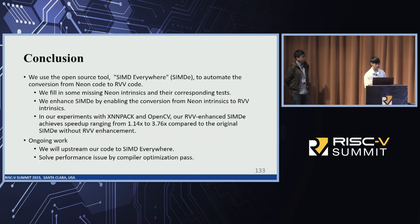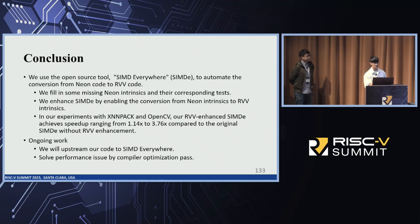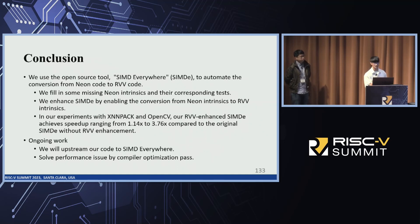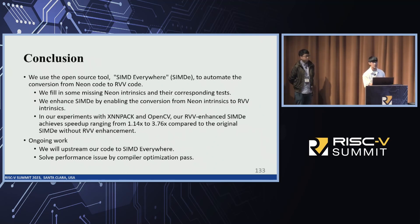In conclusion, we use an open-source tool to automate the conversion from Neon code to RVV code. We filled in some missing Neon intrinsics and their corresponding tests, and enhanced SIMD Everywhere by enabling the conversion from Neon intrinsics to RVV intrinsics. In our experiments with XMPEG and OpenCV, our RVV-enhanced SIMD Everywhere achieves a speedup ranging from 1.14x to 3.76x compared to original SIMD Everywhere. Our ongoing work includes upstreaming our code to SIMD Everywhere and solving the performance issue via further compiler optimization passes.